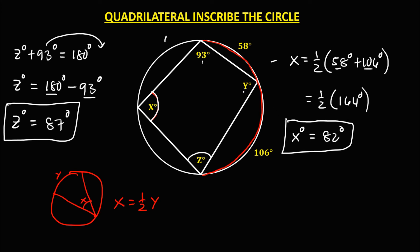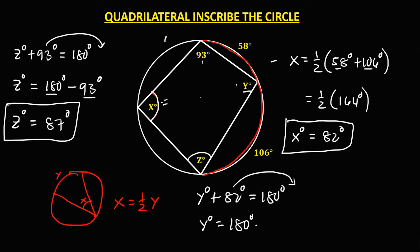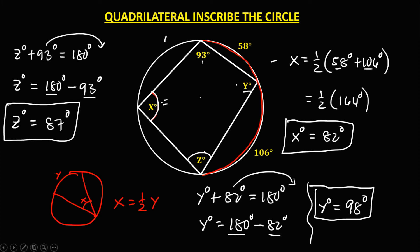To solve for angle Y: since the sum of these two opposite angles is 180 degrees, we have angle Y plus angle X, which is 82 degrees, equals 180 degrees. Transposing 82 degrees, it becomes negative 82. Therefore, angle Y is equal to 180 minus 82, which is 98 degrees. So these are now the values for angle X, angle Y, and angle Z.